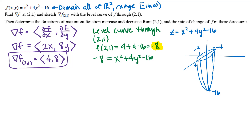When I rearrange the terms, I get an ellipse. Adding 16 to both sides and dividing through by 8 gives: 1 equals x squared over 8 plus y squared over 2. Remember, the level curve is the set of points in the domain that have a specific function output, so we draw it in R2.